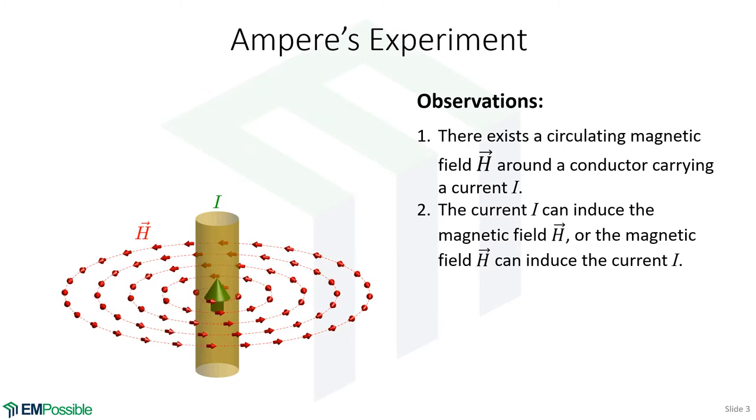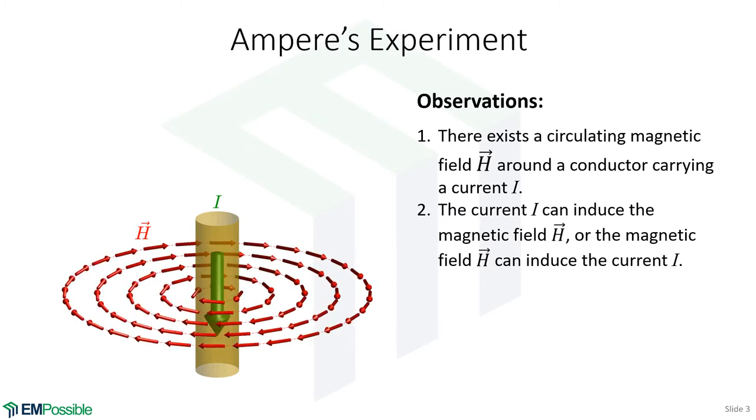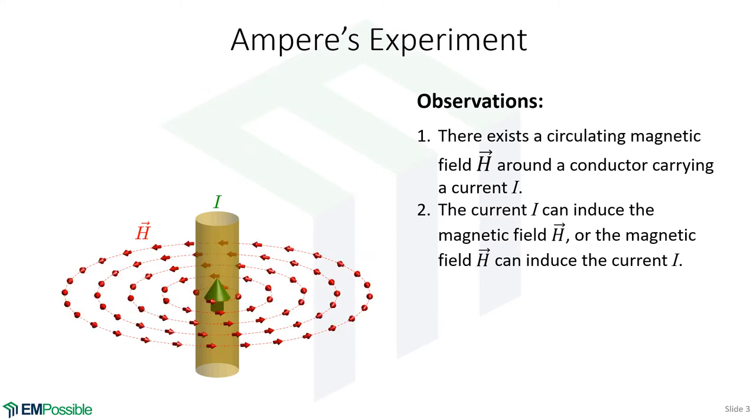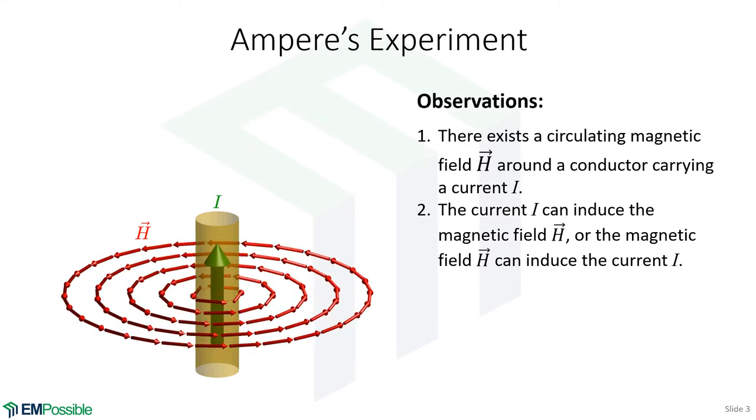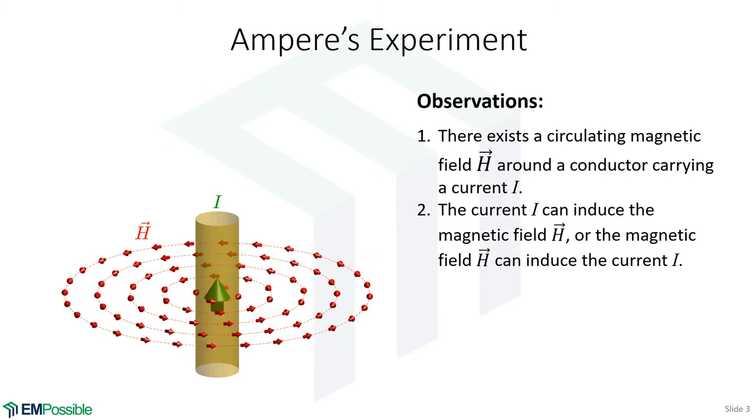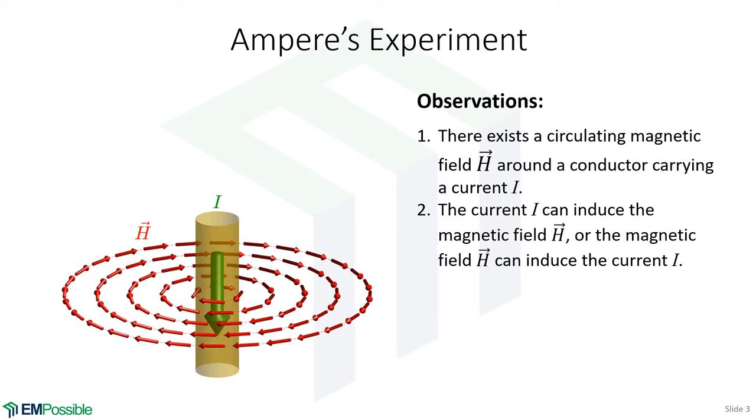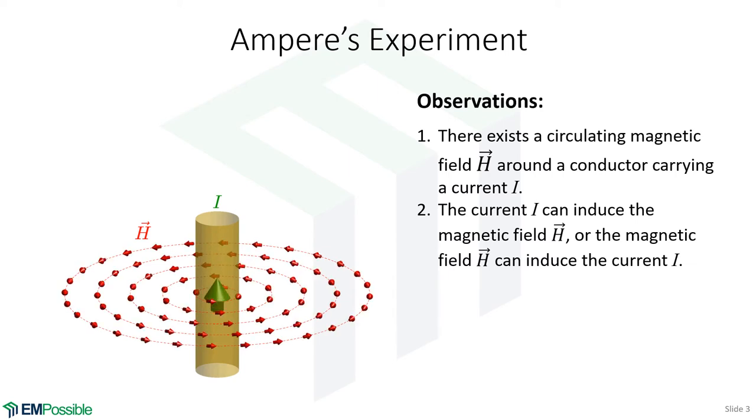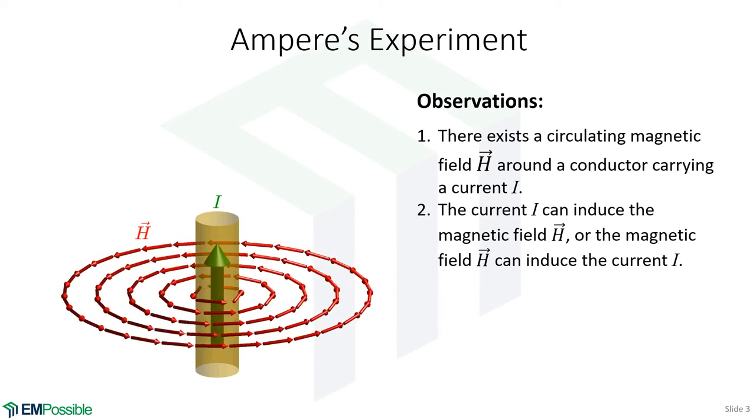Observation number two: this was a bi-directional thing. If the magnetic field exists around the wire and is changing with respect to time, that can induce a current. Otherwise, if there's a current passing through a wire, that will induce a magnetic field circulating around it. So it worked both ways.